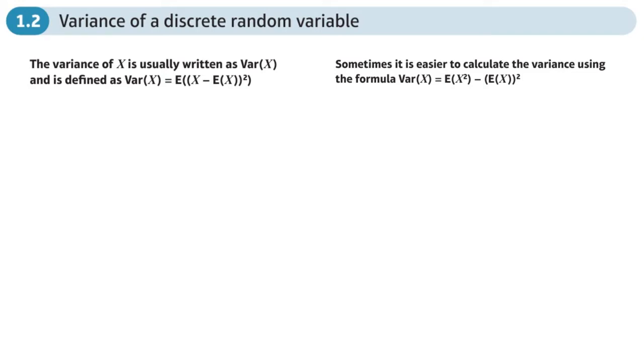The variance, written at the top, the variance of a discrete random variable is defined like this. So it's the sum or the mean of X squared, the expected value of X squared minus the mean squared. So this is the mean squared.